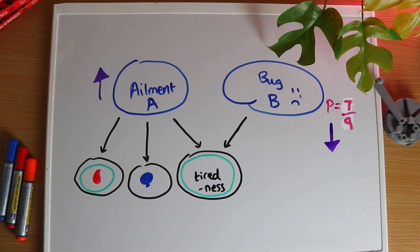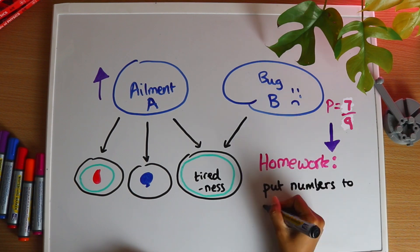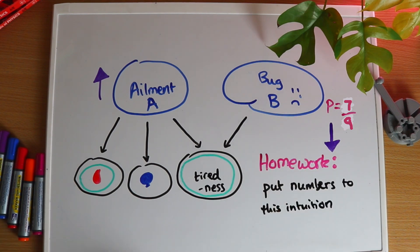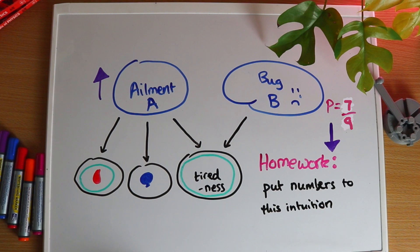That was a tricky situation, so to understand it, I recommend that you make up some numbers for this intuition and verify it mathematically. I did this when I was making this video, and it really helped me clarify what it means for something to be a symptom of A, but not B. So honestly, try it.